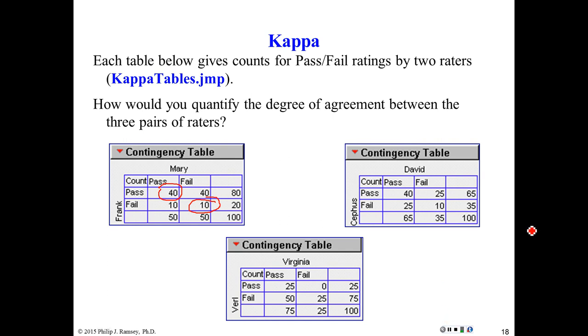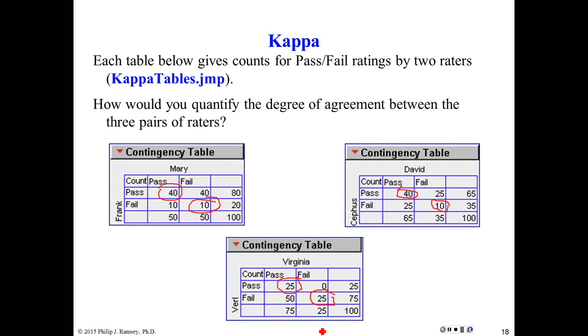We look at David and Cephas. Similarly, they agree 50% of the time. By the way, notice the distribution of the errors in the off diagonals are different. And then finally, let's just take a look at Verl and Virginia. They also agreed 50% of the time. But again, look carefully, and you'll see in the off diagonals, in all three cases, the cases where they didn't agree, the discordances, had very different distributions.